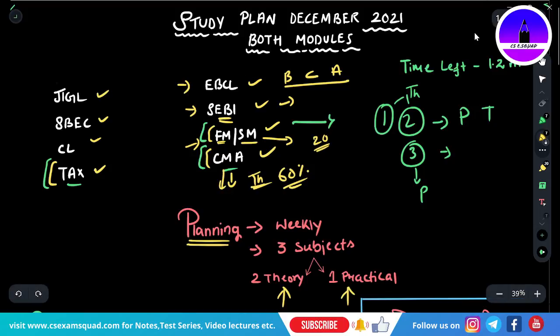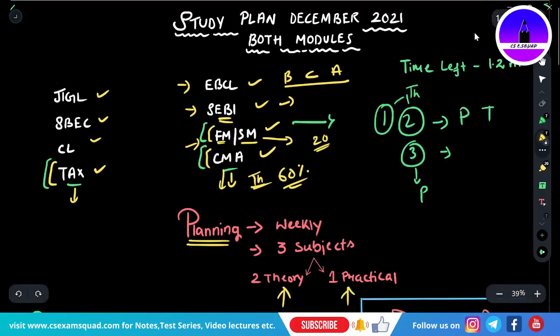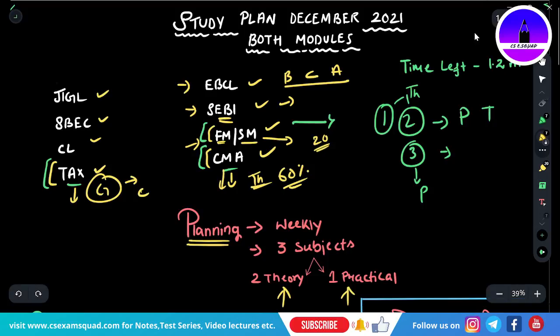For CMA, theory is also a must - 60% theory will be asked. Your CMA teacher will advise you in a better manner. For Tax, first do Customs, then GST, and then go to the entire direct tax - salary, five heads, and all that.